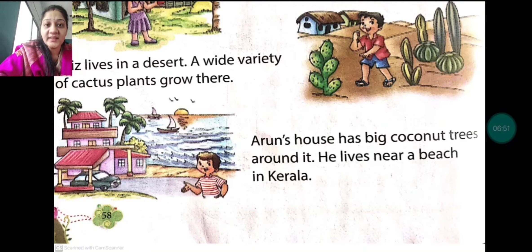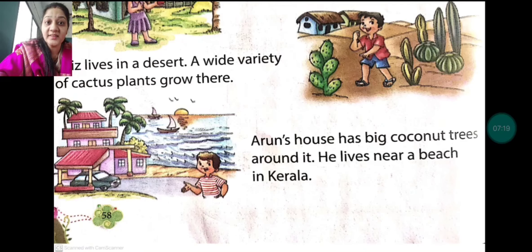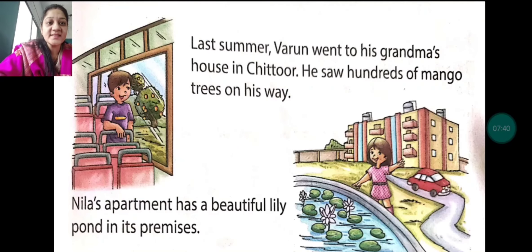So in all three cases — Sona's home, Aziz's home, and Arun's home — each area has different plants. Sona's home is in a hilly area so there are apple and cherry trees. Those who live in a desert area have cactus plants. And those who live near water areas find many coconut trees — like Arun's home near the beach in Kerala, which was surrounded by coconut trees.